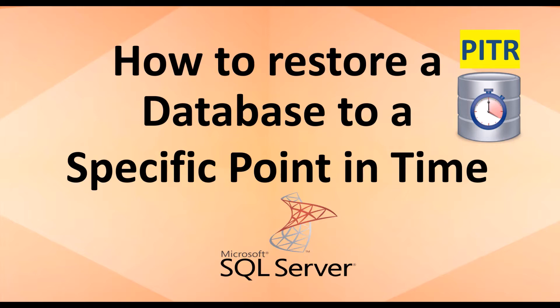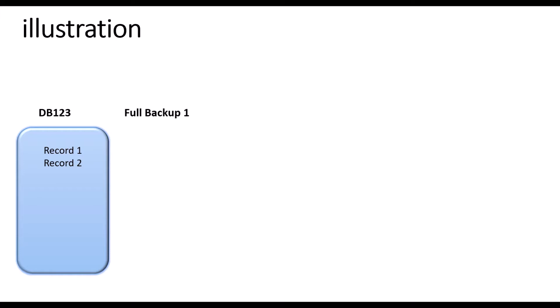Let me explain using a simple illustration. I have a database with two records. I have taken a full backup — if I take a full backup I'll get those two records in the backup file. Then I'm going to insert one more record, which is record three, and after that I will take a differential backup.